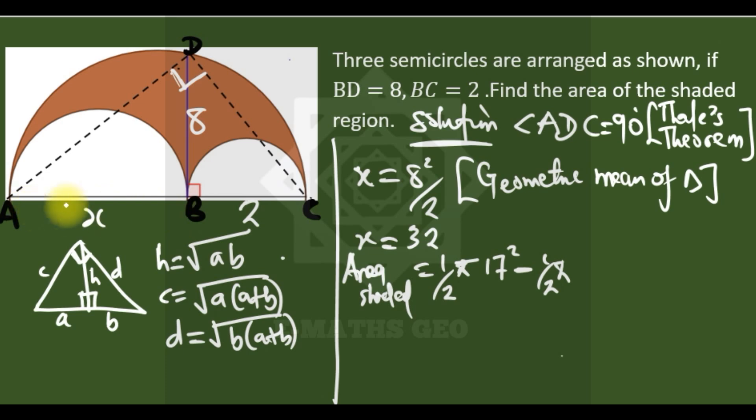The diameter of this semicircle is x, which is 32, so half of that is 16. So 16 squared minus - the diameter of this is 2, therefore the radius is 1 - so 1 squared.